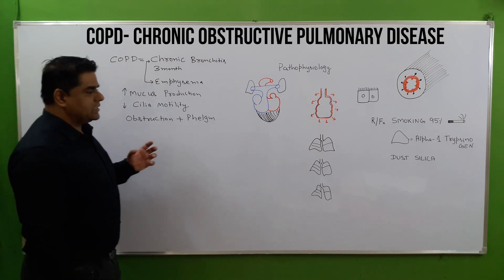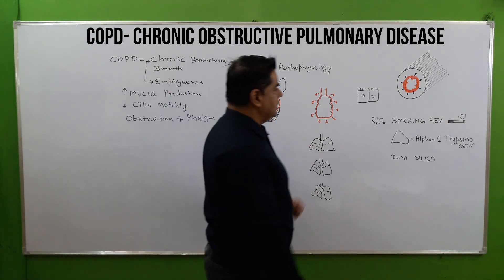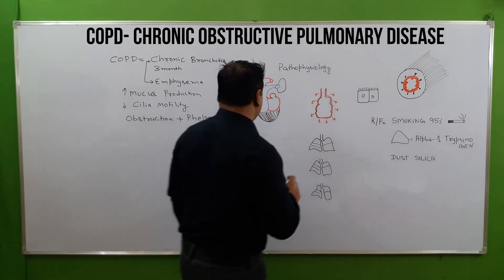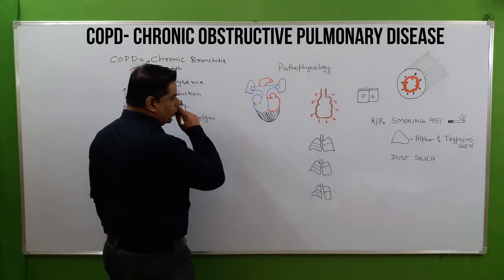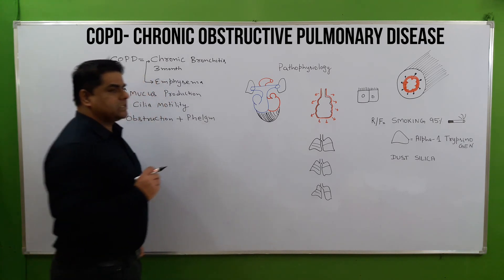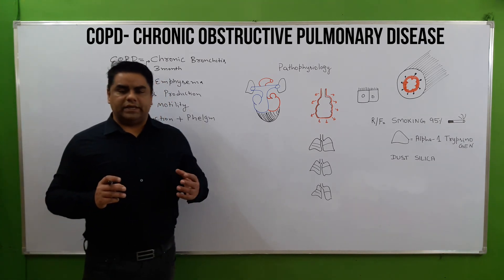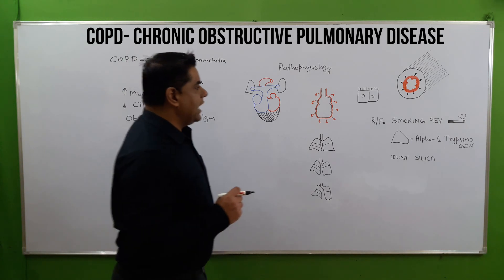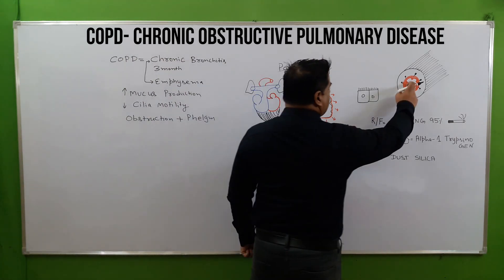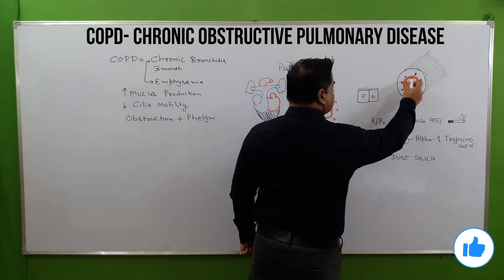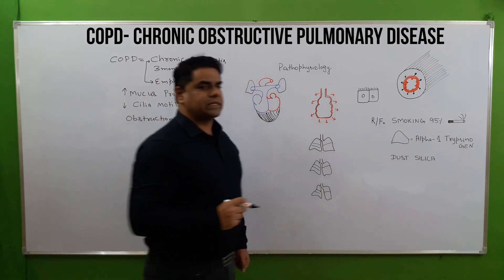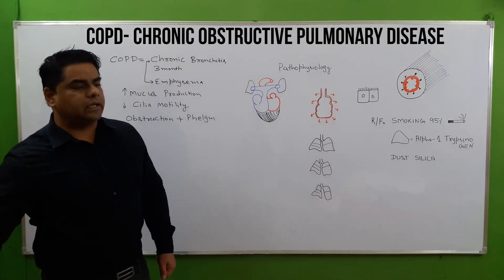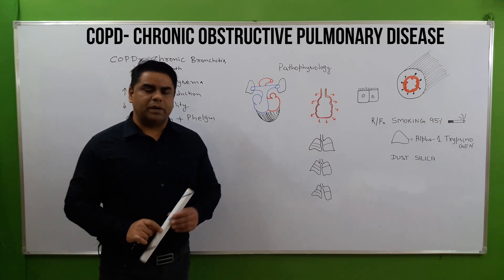In our bronchioles, which are making airways, these airways have a lumen, mucosa, submucosa part, and a smooth muscle layer — as we already discussed in the anatomy and physiology part.